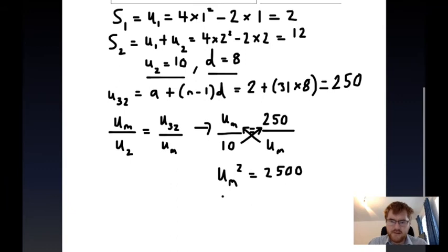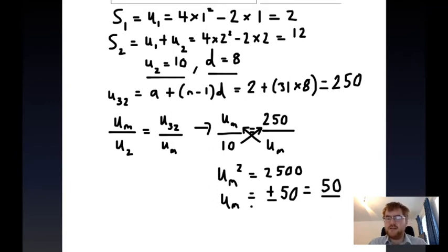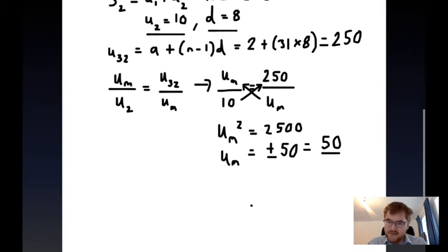We square root both sides and then we get um is equal to plus or minus 50. But because we're working with terms in the sequence, we have to take the positive one, so we work out that um itself is equal to 50.